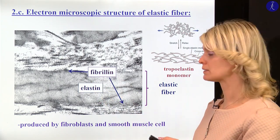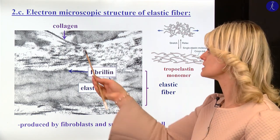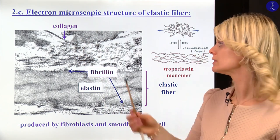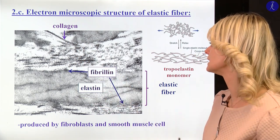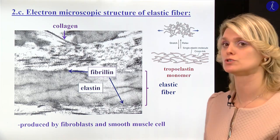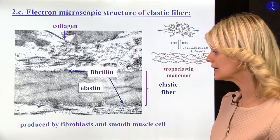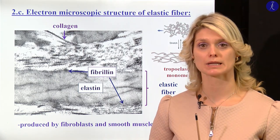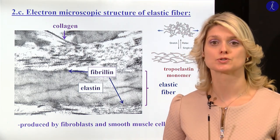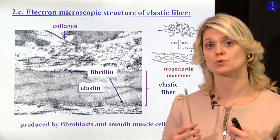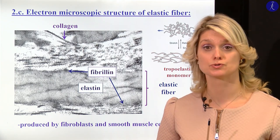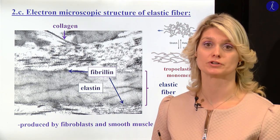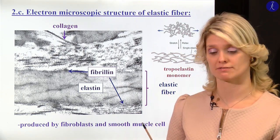In this electron microscopic picture you can also see a little part of the collagen molecule, and we can compare the electron microscopic pictures of the two fibers. It is really important to mention that not only fibroblasts, but also smooth muscle cells are able to produce elastic fibers — for example, in the case of large elastic vessels.